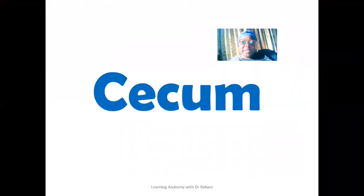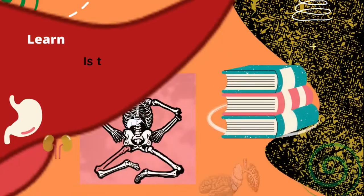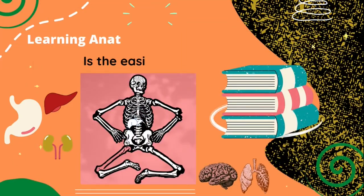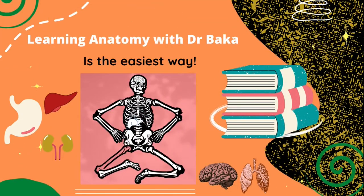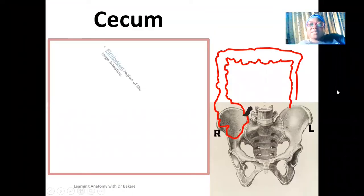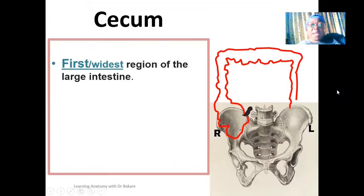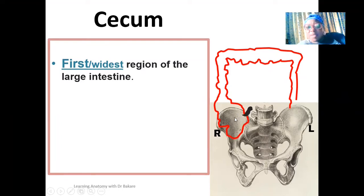Welcome to my channel. Let's look at the anatomy of the cecum. The cecum is the first and the widest region of the large intestine. This is the large intestine highlighted in red, and the first or initial region of the large intestine is the cecum.